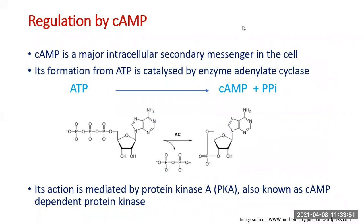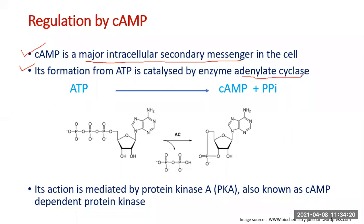Cyclic AMP, which you will be studying in the second semester, is a major intracellular or secondary messenger. There are different types of secondary messengers in the eukaryotic cell for mediating the action of proteinaceous hormones, and cyclic AMP is one of the major ones. It is formed from ATP by the action of the enzyme adenylate cyclase.